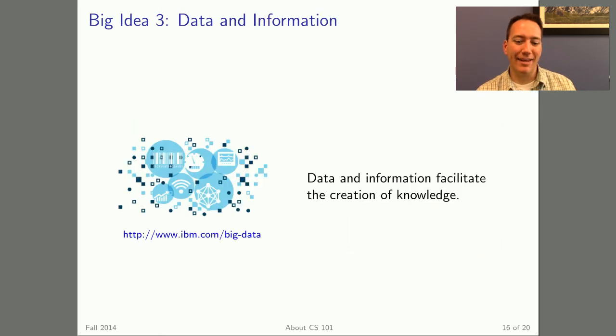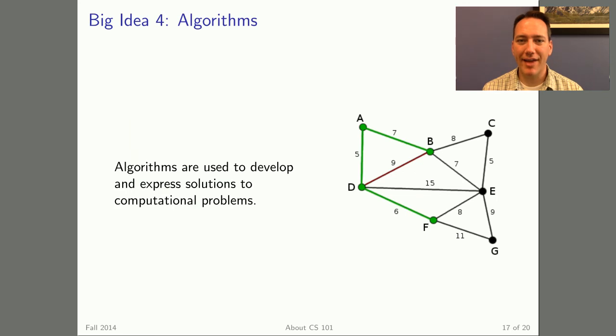The third big idea is data information and how they facilitate the creation of new knowledge. We'll look at data at multiple levels throughout the course, whether it's the ones and zeros on a computer processor or all of the tables in a data warehouse. The fourth big idea is that of algorithms and how algorithms express solutions to computational problems. We have an entire unit on algorithms, but there's also algorithms throughout the course in all the other units.